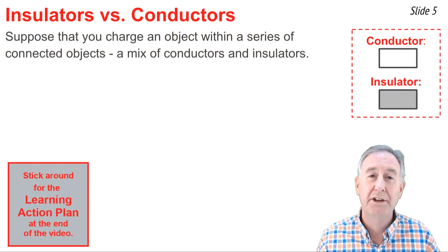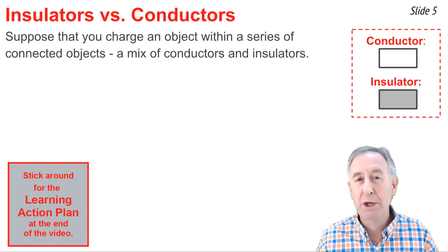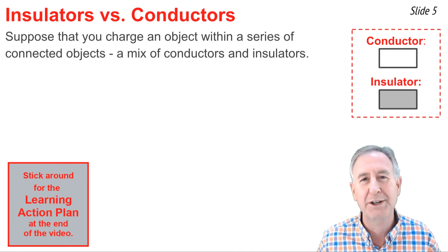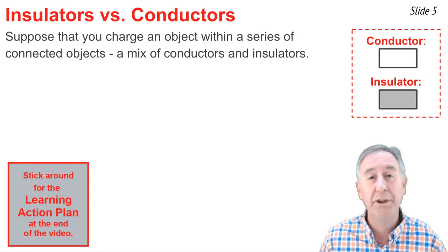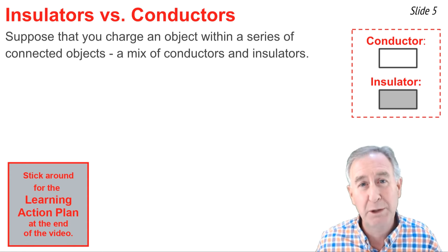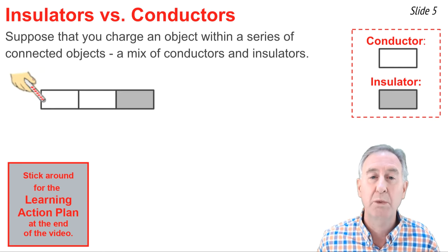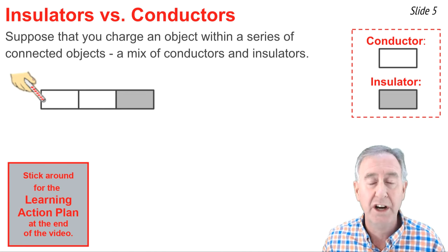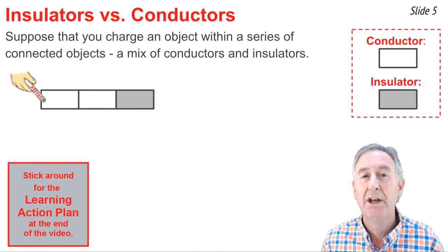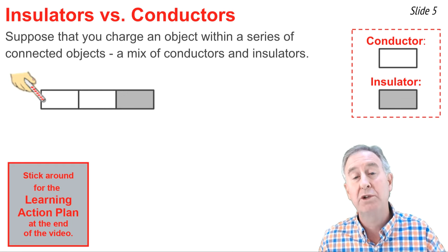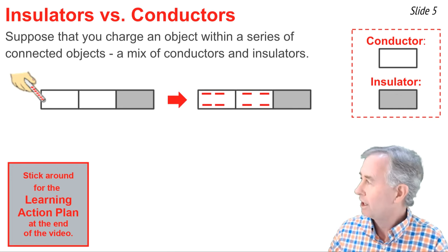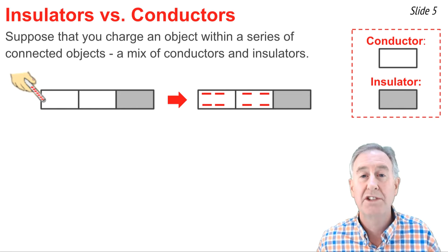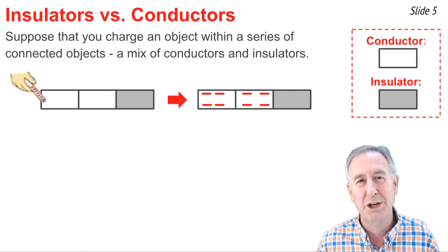To further illustrate the difference between an insulator and a conductor, let's suppose we charge an object within a series of interconnected objects that are a mix of insulators and conductors. We'll use a white-filled rectangle to represent a conductor and a gray-filled rectangle to represent an insulator. In our first example, we have two conductors and an insulator, and we touch the conductor on the left. We deposit charge there, and that charge distributes itself uniformly throughout that conductor and continues across the surface of both conductors, but does not enter the insulator, since insulators do not permit the free flow of excess charge across their surface.